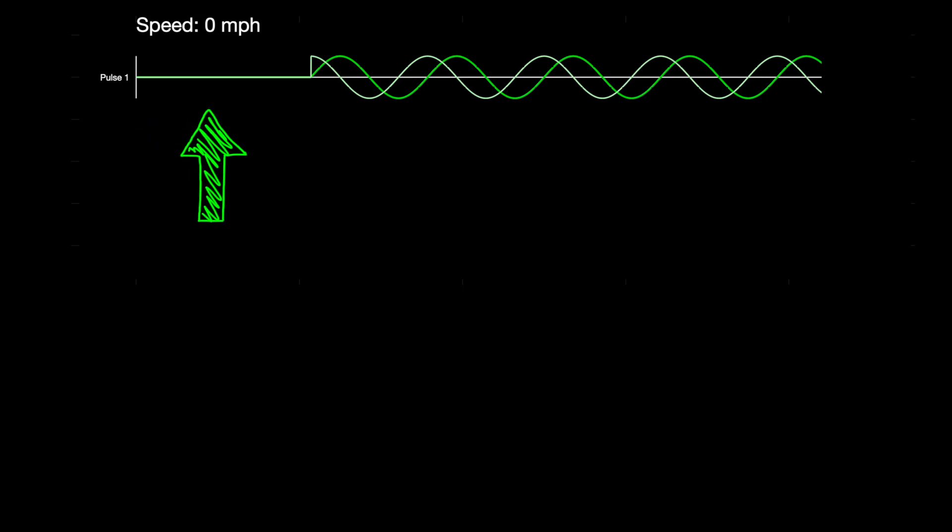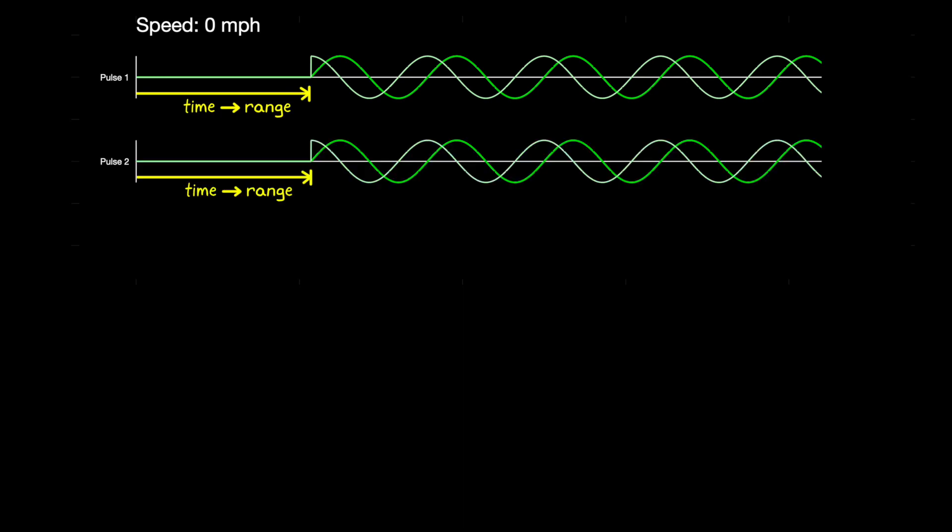And then the reflected pulse is received. Again, the time between the transmit pulse and the received pulse is associated with the range of the object.